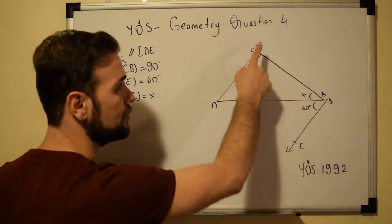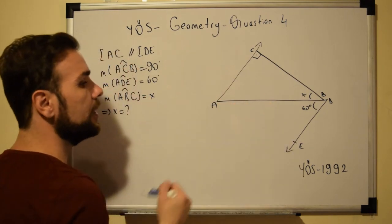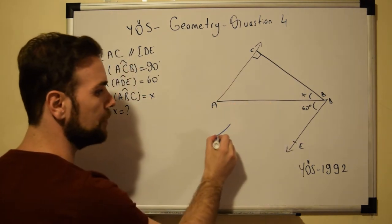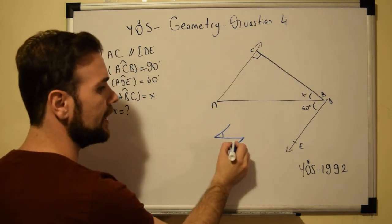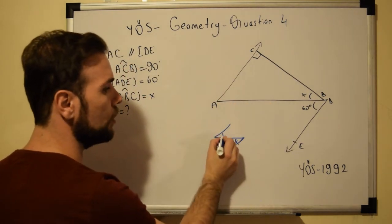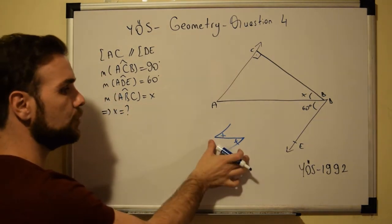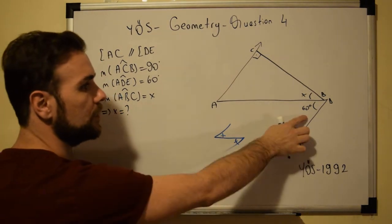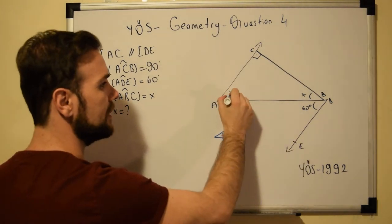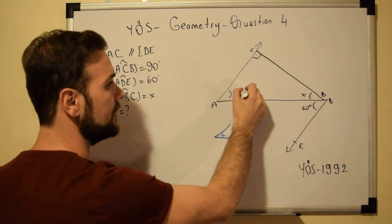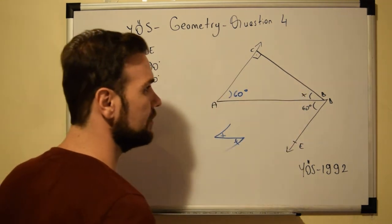We have two parallel lines and, as you can see, we have the Z-form. When we have the Z-form, this angle will always be equal to this angle. Since angle ADE is 60 degrees, the alternate angle is also 60 degrees.